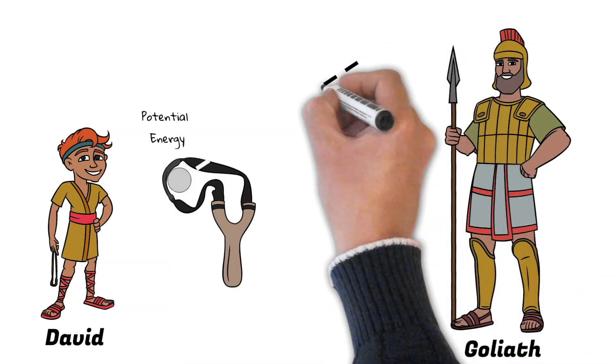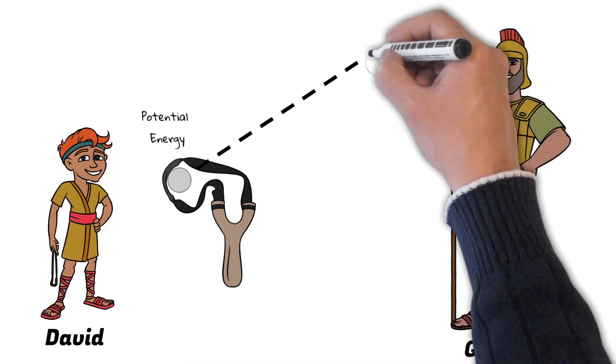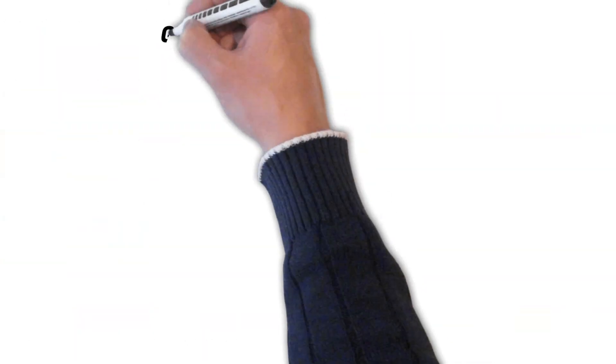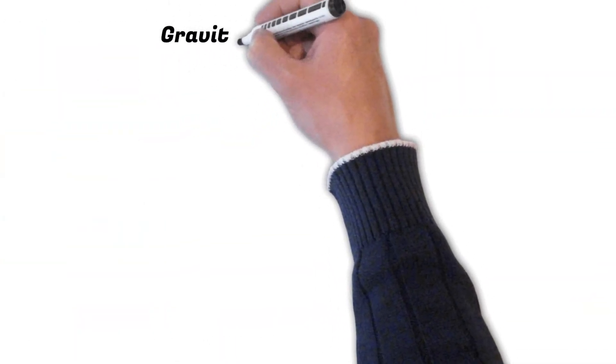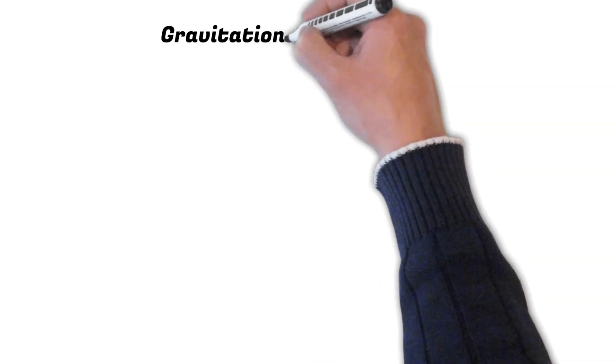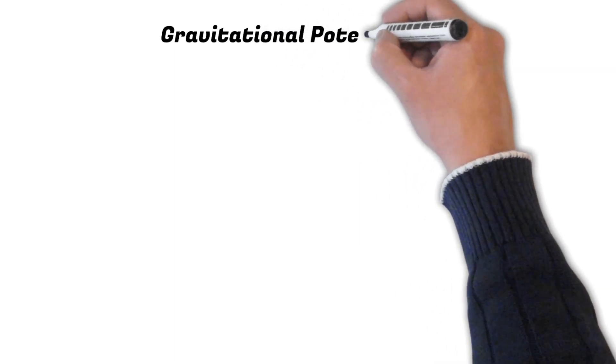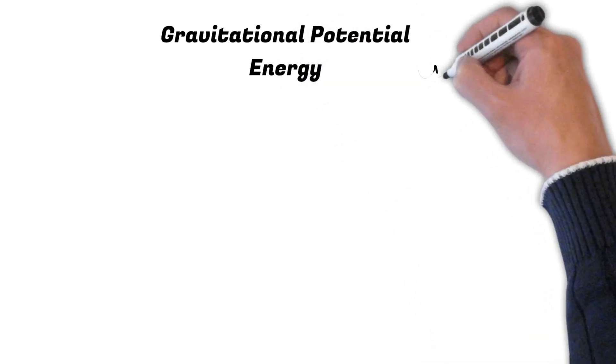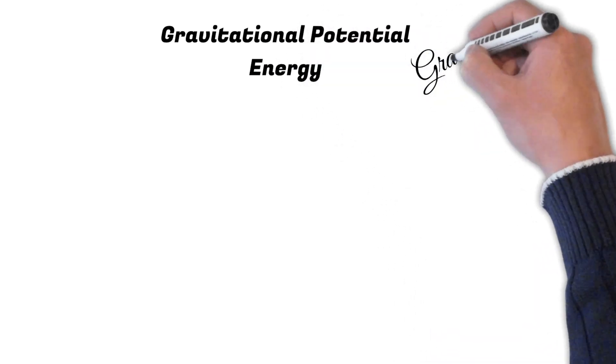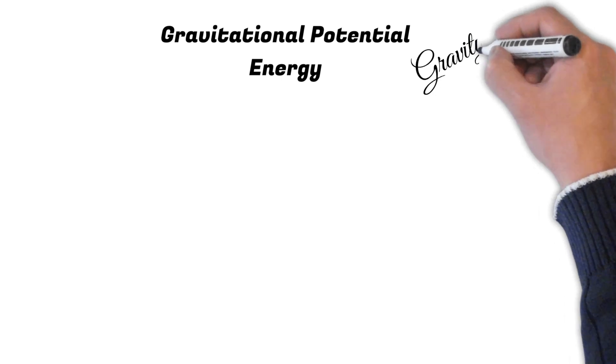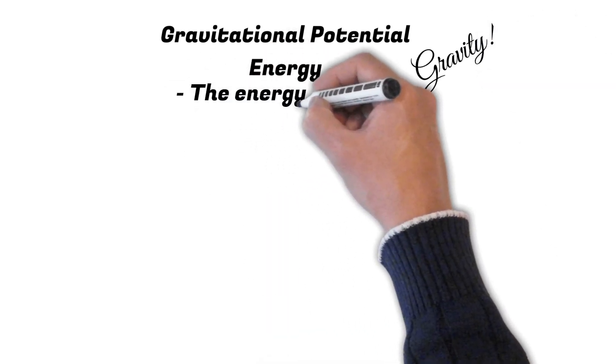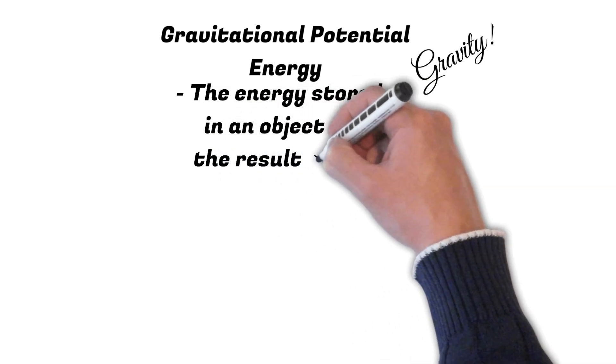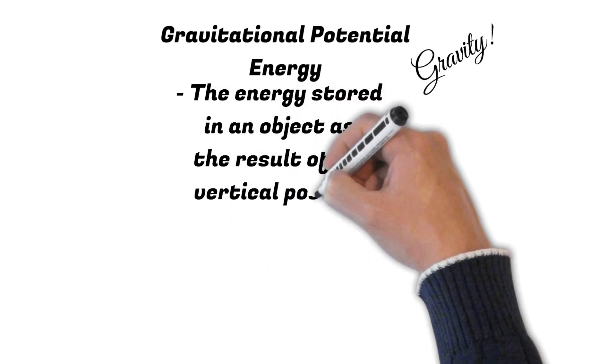The other type of potential energy is called gravitational potential energy. So when I say that word gravitational, what do you hear? I hear the word gravity. So gravity is a big part of this potential energy. This is the energy stored in an object as the result of its vertical up and down position or its height.